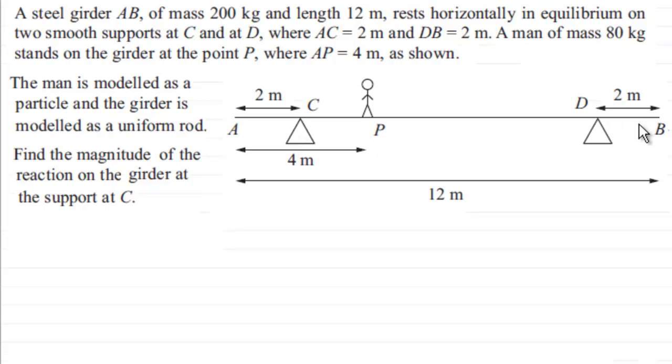DB is 2 meters. We've got a man of 80 kilograms standing on the girder at point P where AP equals 4 meters. Now the man is modeled as a particle and the girder is modeled as a uniform rod.